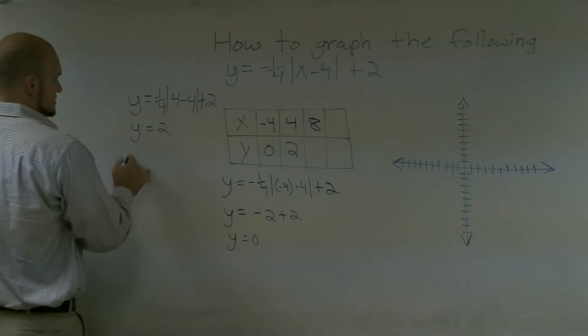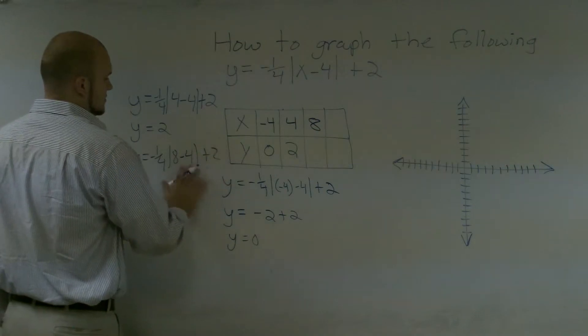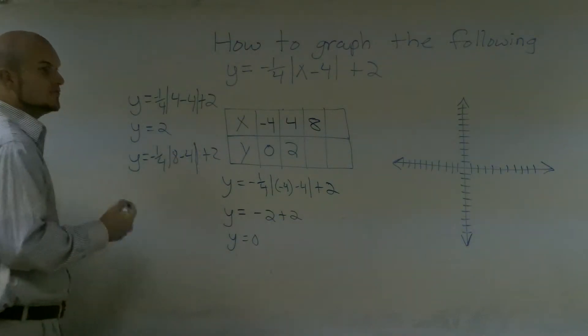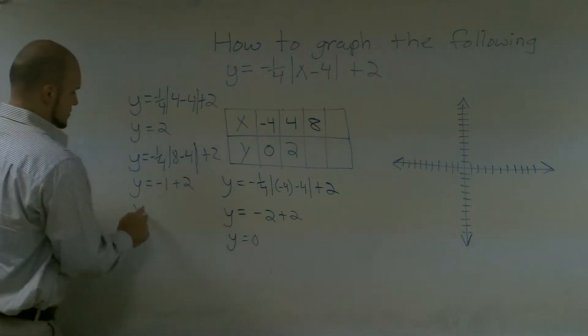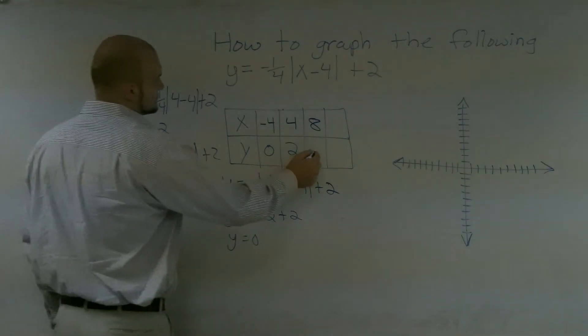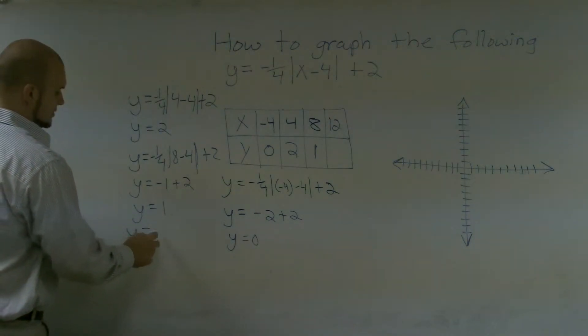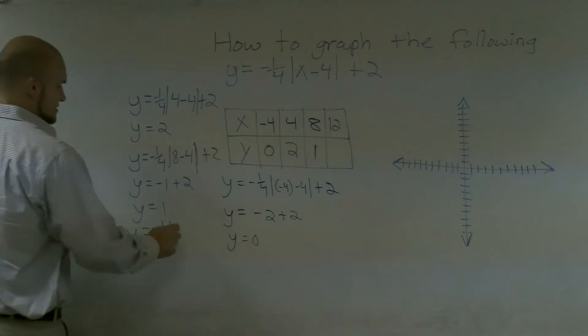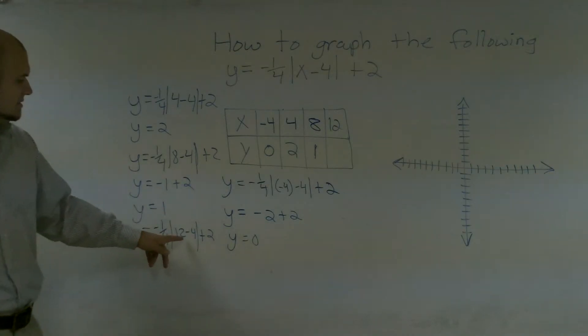And let's do 8. y equals negative 1/4 times 8 minus 4 plus 2. 8 minus 4 is 4, times negative 1/4 is negative 1, plus 2 equals 1. And for 12, y equals negative 1/4 times 12 minus 4 plus 2. 12 minus 4 is 8, 8 times negative 1/4 would be negative 2, plus 2 again would be 0.